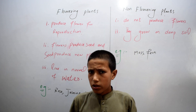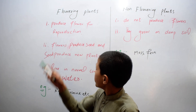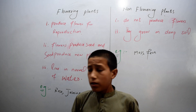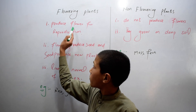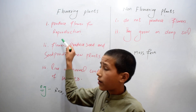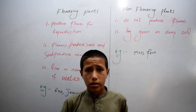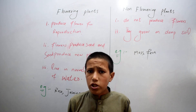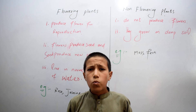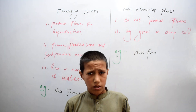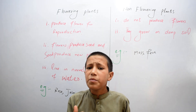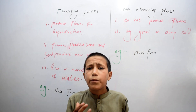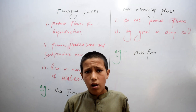Do you know students what is flowering plants? Flowering plants produce flowers for reproduction. Do you know students what is reproduction? Reproduction means it can produce offspring.